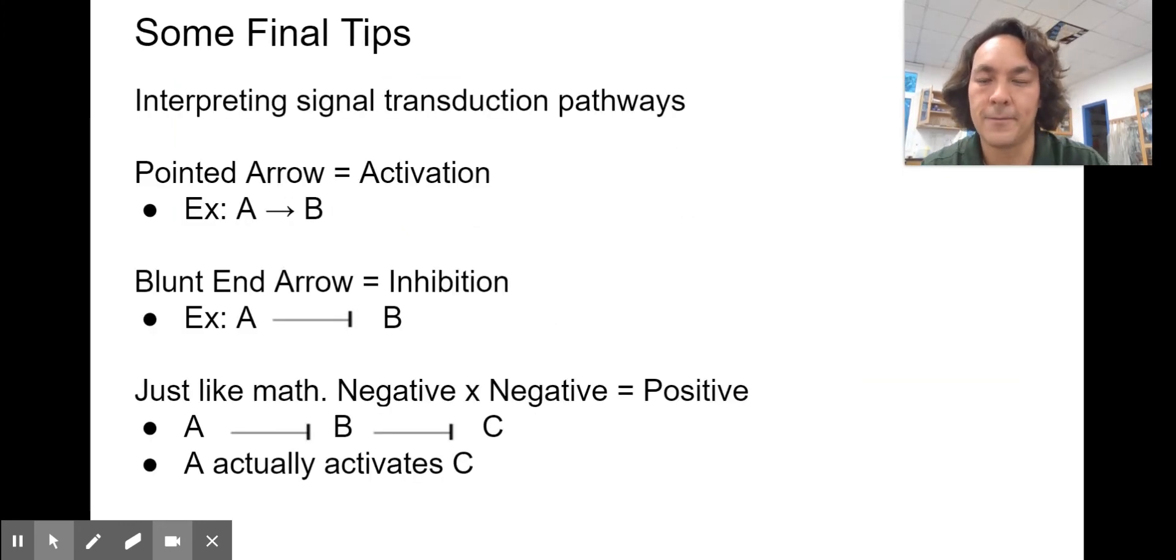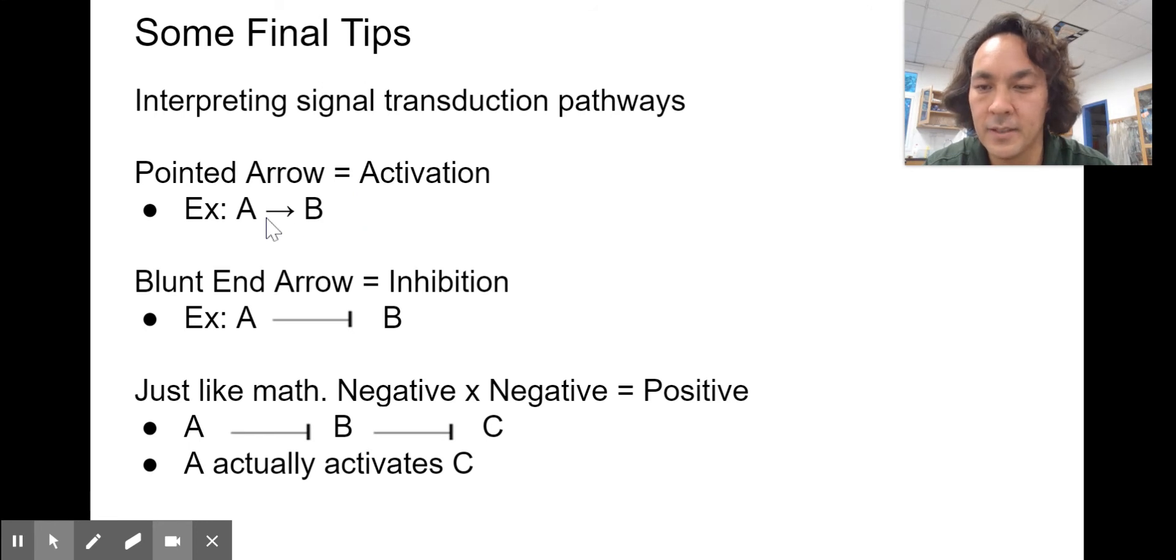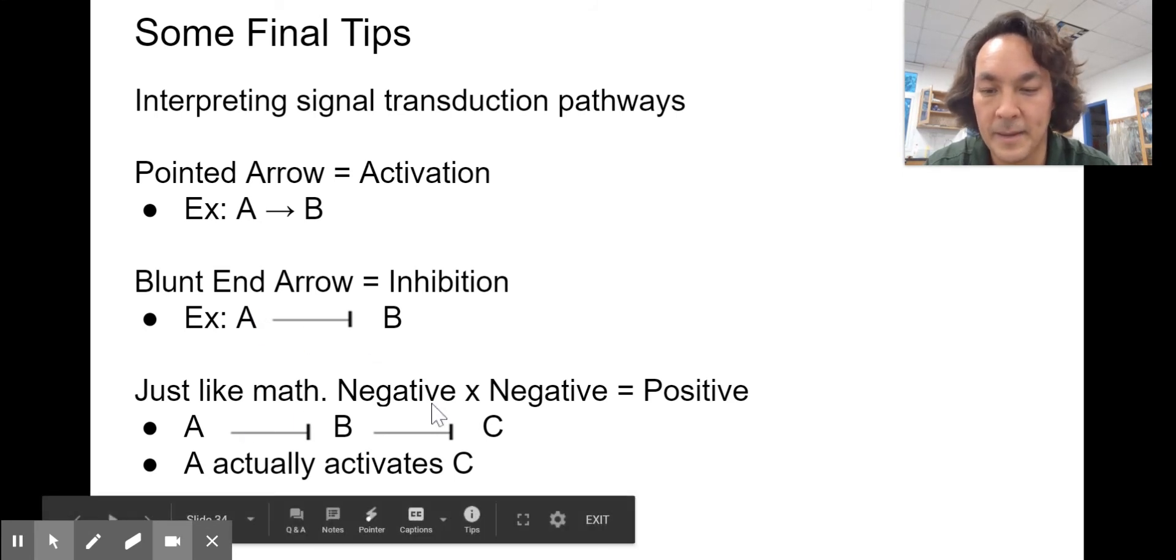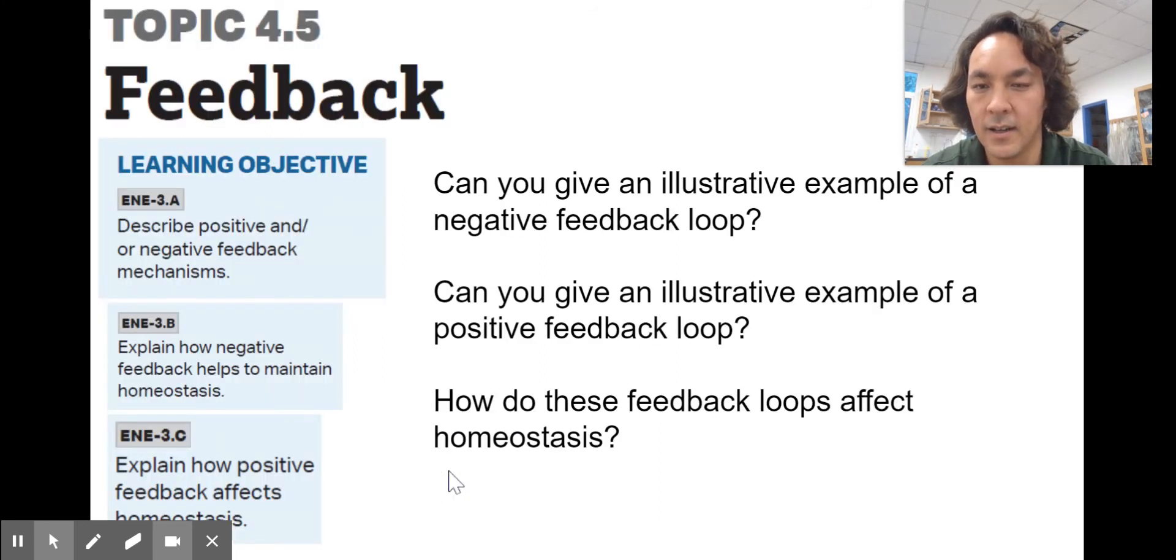The leptin one, we went over it with a severely obese two-year-old. The two-year-old had a malfunction in the actual leptin molecule. His receptors worked, but the leptin molecule wasn't binding with the receptor. So there was a mutation in the leptin gene. The child had injections of leptin. The problem is if there's a mutation in the leptin receptor, then it's going to be a lot harder to fix because injections of leptin won't fix it. Some final tips for the signal transduction pathways. When you're reading the pathways, an arrow means activation. For example, this A is going to activate B. The blunt end arrow means inhibition. So A is going to inhibit B here. Just like math, a negative times a negative is equal to a positive. A is going to inhibit B. B inhibits C. So A actually activates or promotes C here.